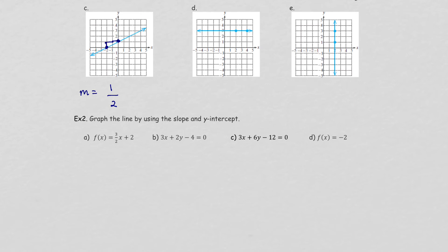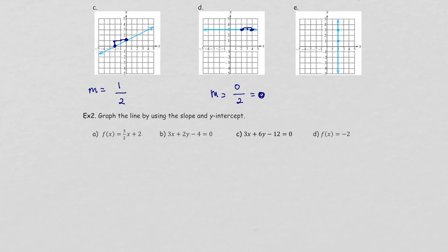For a horizontal line, from the first point to the second point, you're not moving up or down at all — only moving right 2. So the rise is 0 over run 2, which equals 0. This confirms that a horizontal line has a slope of 0, as we defined earlier.